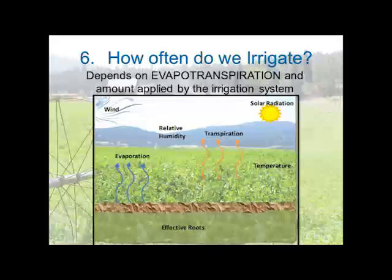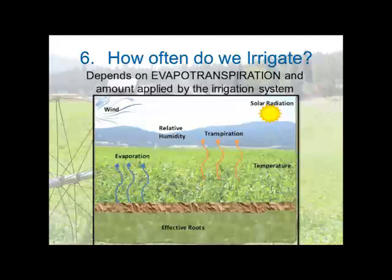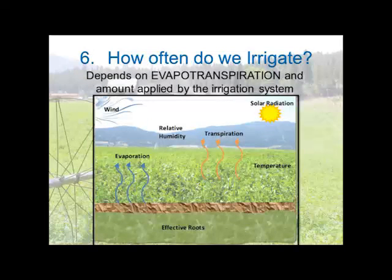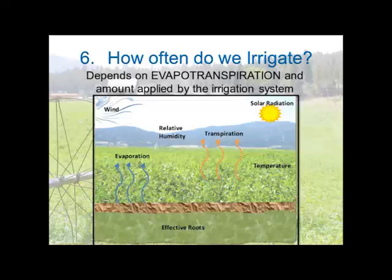Evapotranspiration — the 7 or 4 millimeters per day values — come from a weather station. When someone asks what goes into evapotranspiration, think weather station: solar radiation, transpiration, relative humidity, temperature, wind. It is not crop, it is not soils — the weather station never knows what crop or soils are there. You get the reference ET from the weather station and then adjust for the type of crop with crop coefficients. Don't throw soils and crops into your evapotranspiration directly — it is the reference ET.